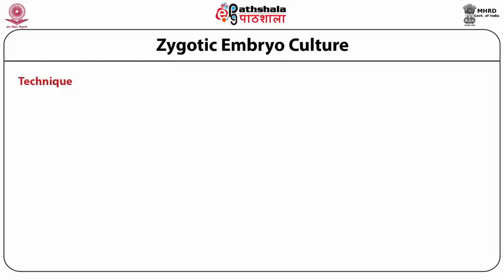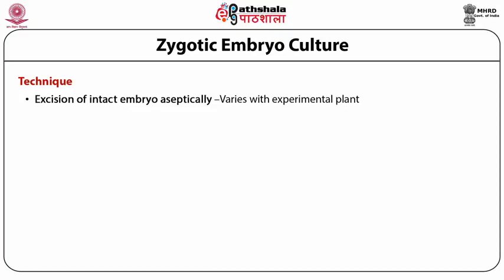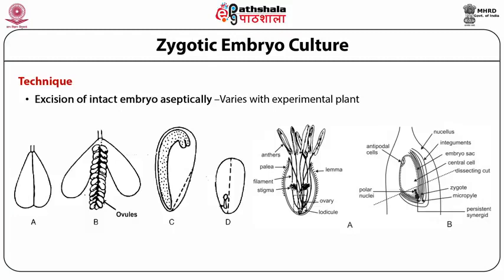The basic technique of embryo culture involves the aseptic excision of an intact embryo. The technique may vary with the experimental plant and the stage of embryo at which it is excised. The following two diagrams show zygotic embryo isolation in Capsella bursa-pastoris and in wheat. The location of the embryo in a Capsella seed is lateral, so that in a mature seed, if you give a lateral incision and gently squeeze, the embryo will come out.